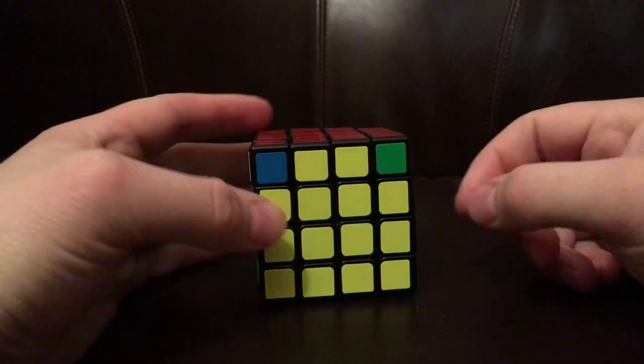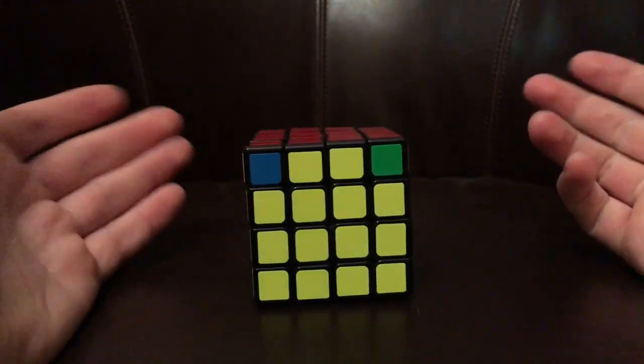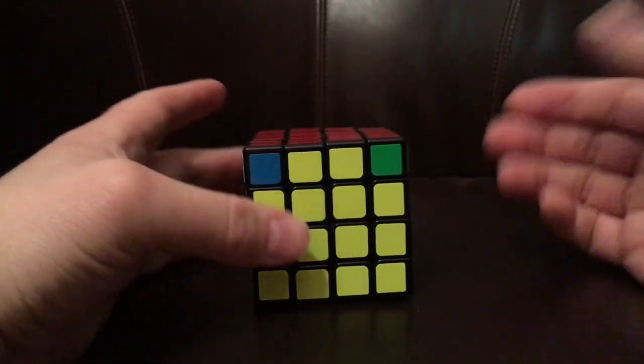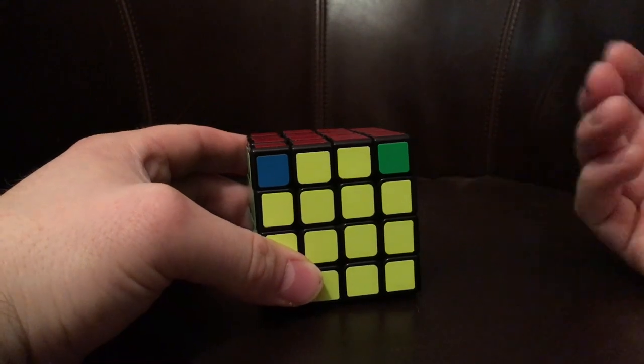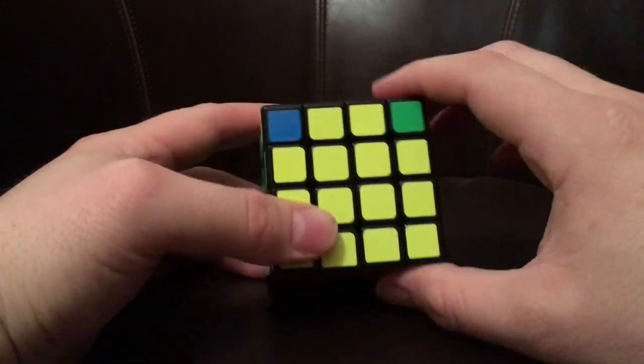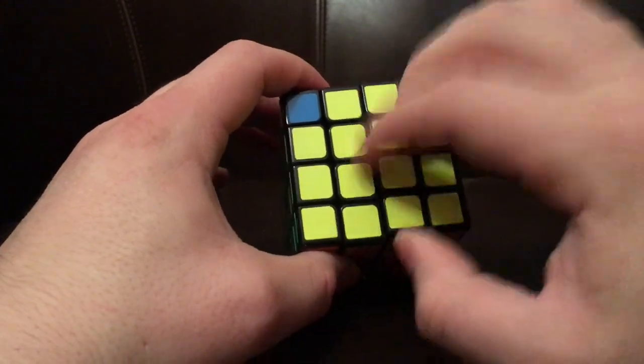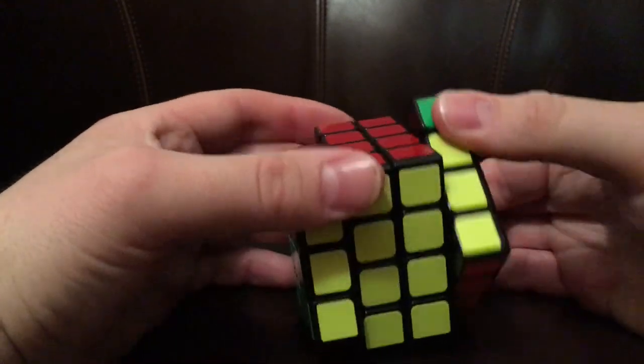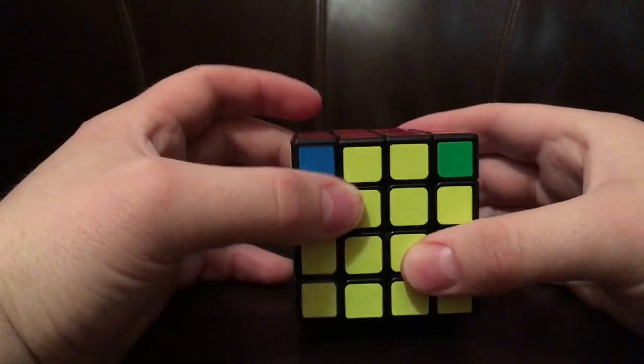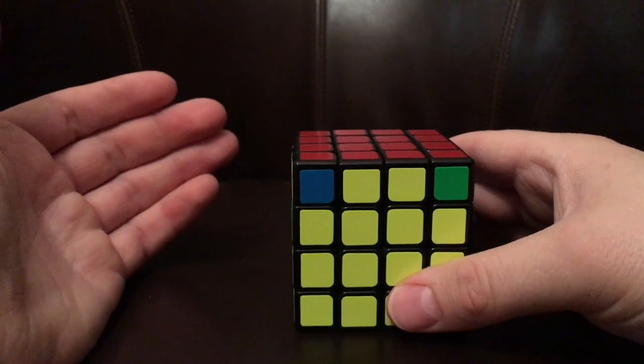I want to go into another parity that will occur on a 4x4, 6x6, and so forth. These parities occur on these even-layered cubes when there's no true center, when you've got to build the center into each of these sections. But this parity is a last-step parity.